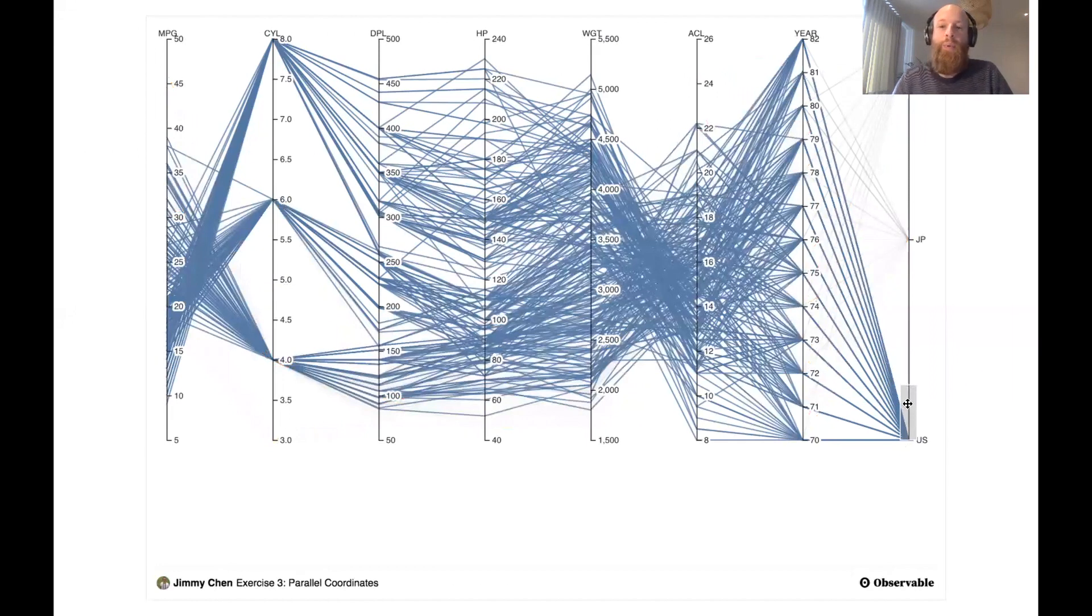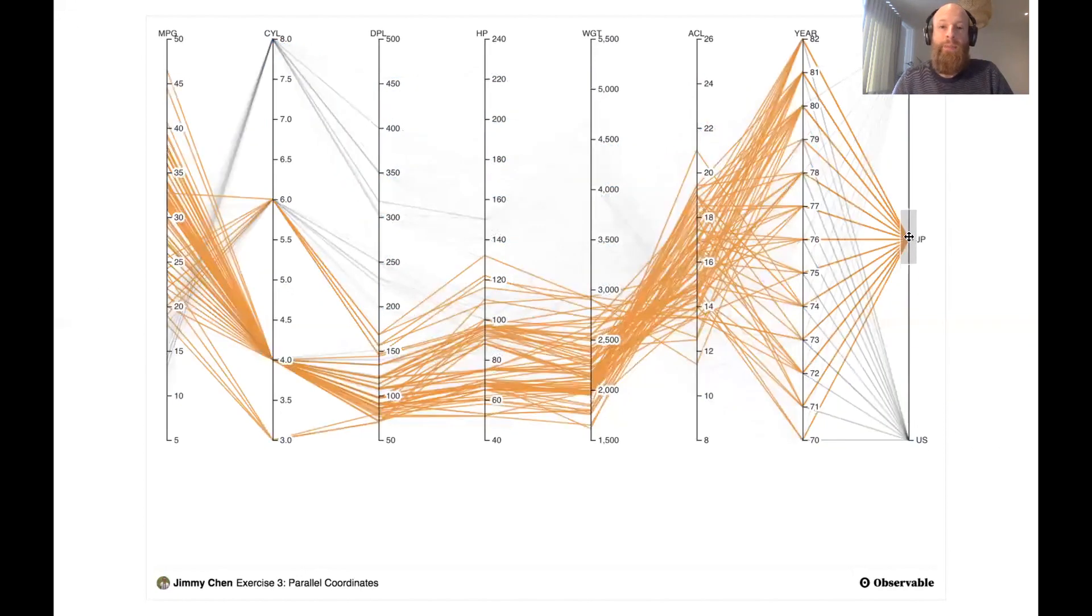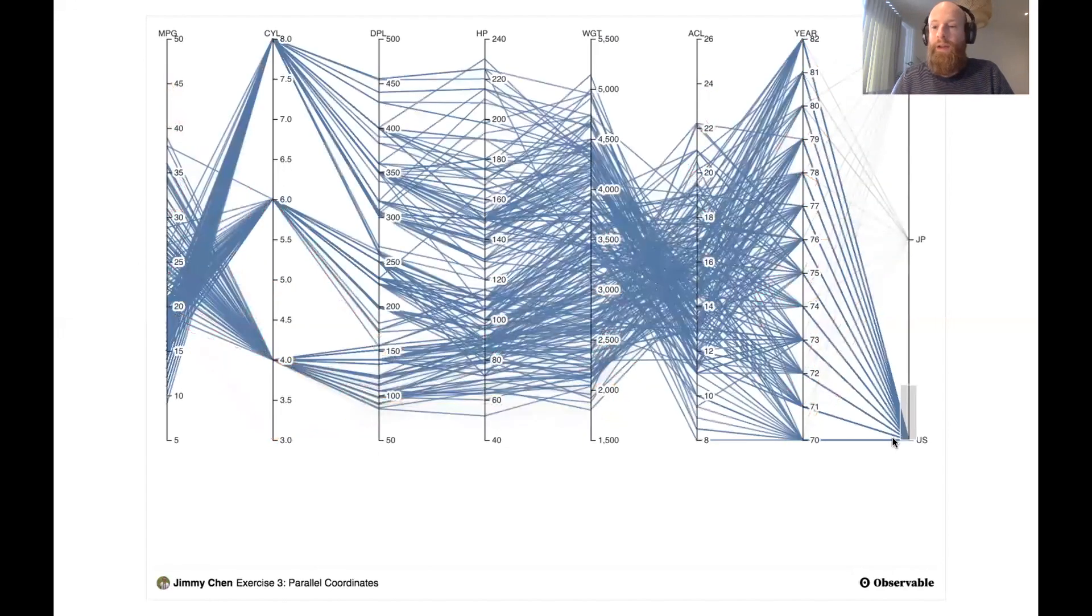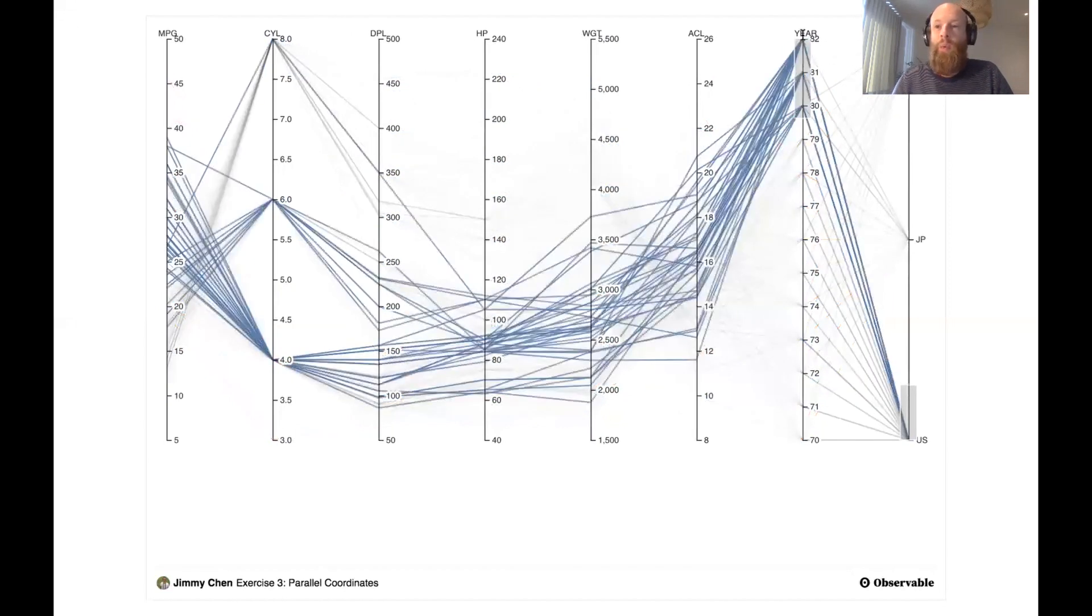So for example, if I brush the axis containing the origin, the country of origin of the cars, then I can highlight the cars from the US, from Japan, and you'll notice that the cars coming from Japan have much more smaller engines, so not a lot of horsepower and displacement. The same applies to the EU. And then if I combine this brush with another brush on the year cars were built, we can see that even the cars from the US don't have big engines when they were built at the end of the 70s or the beginning of the 80s. So this is the effect of the oil crisis in the cars data set.